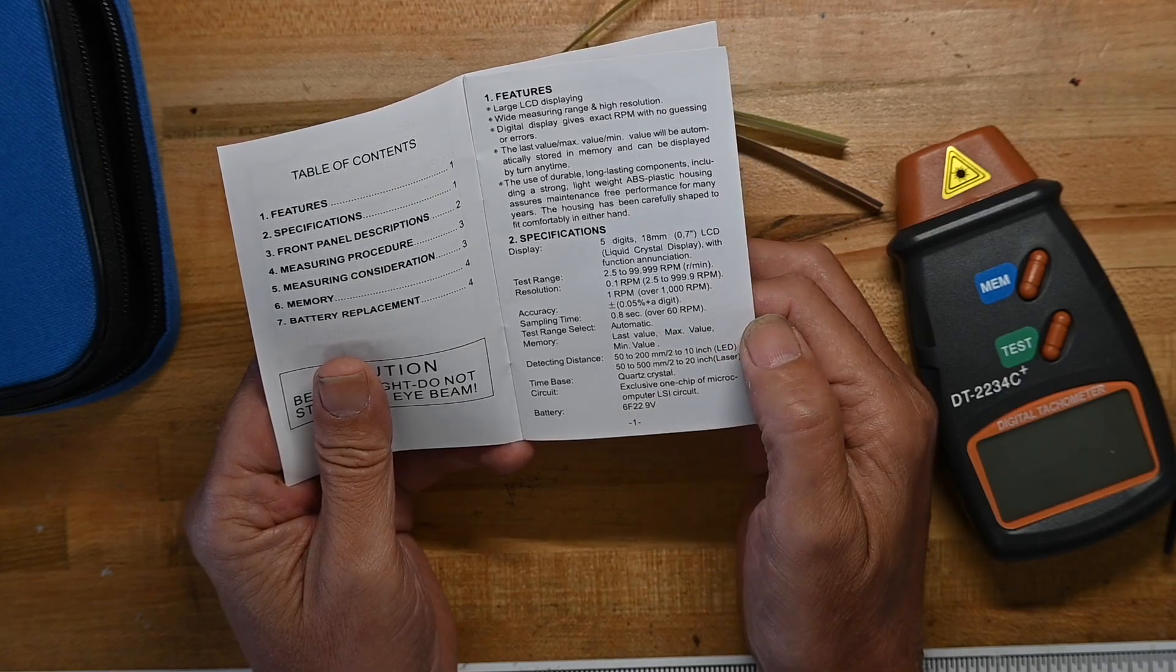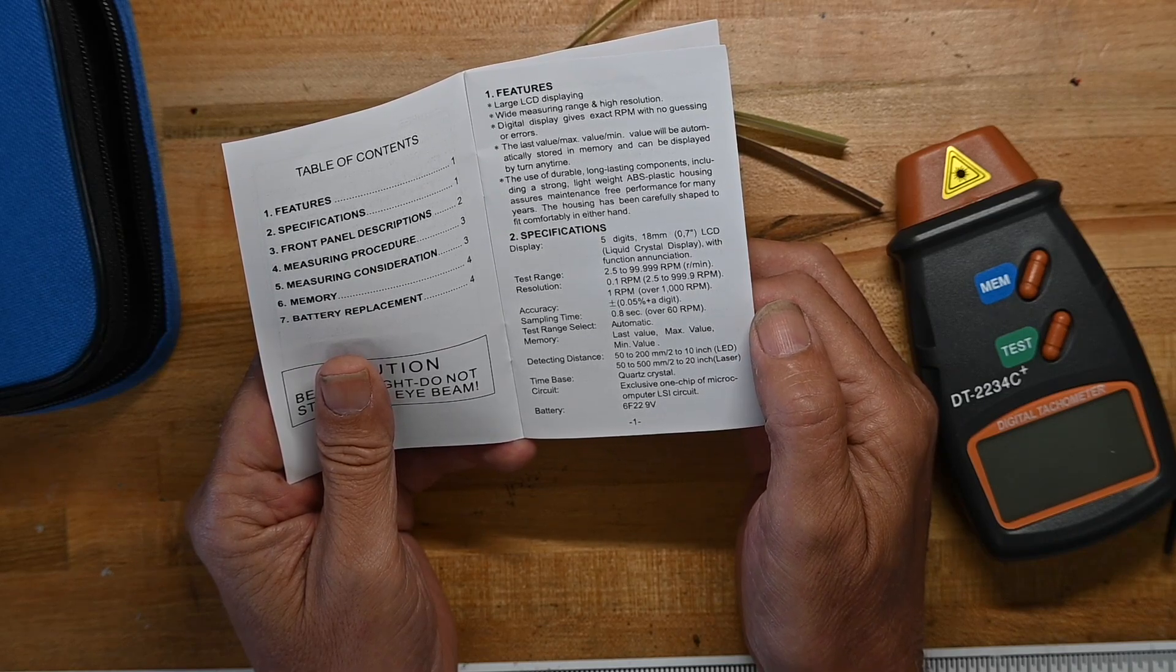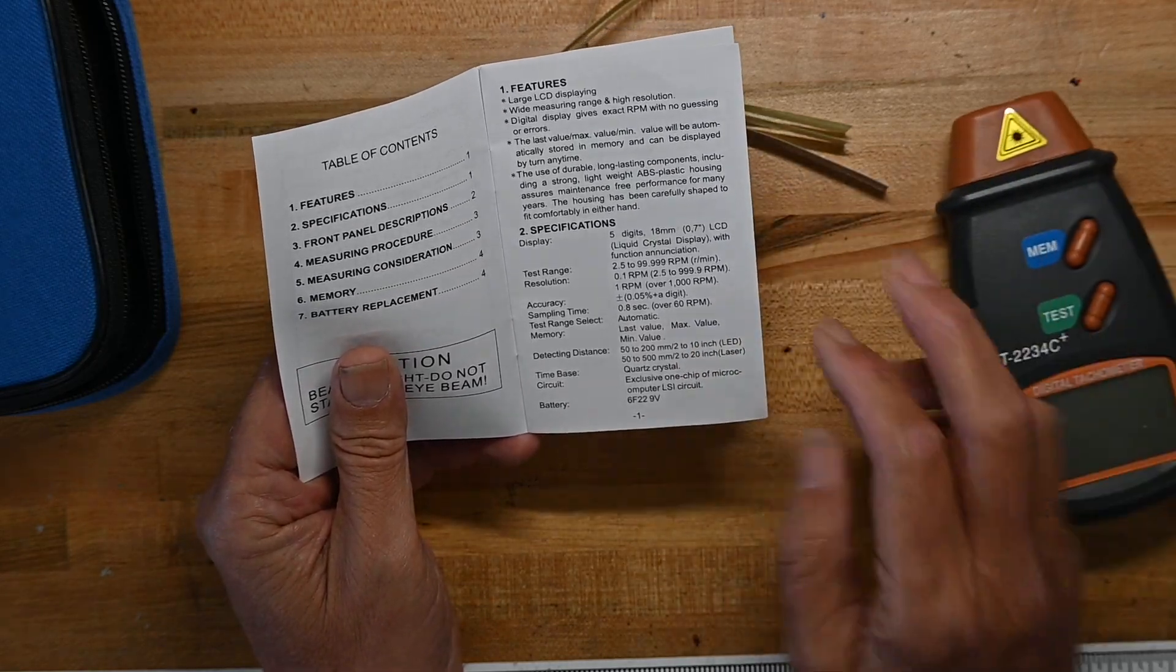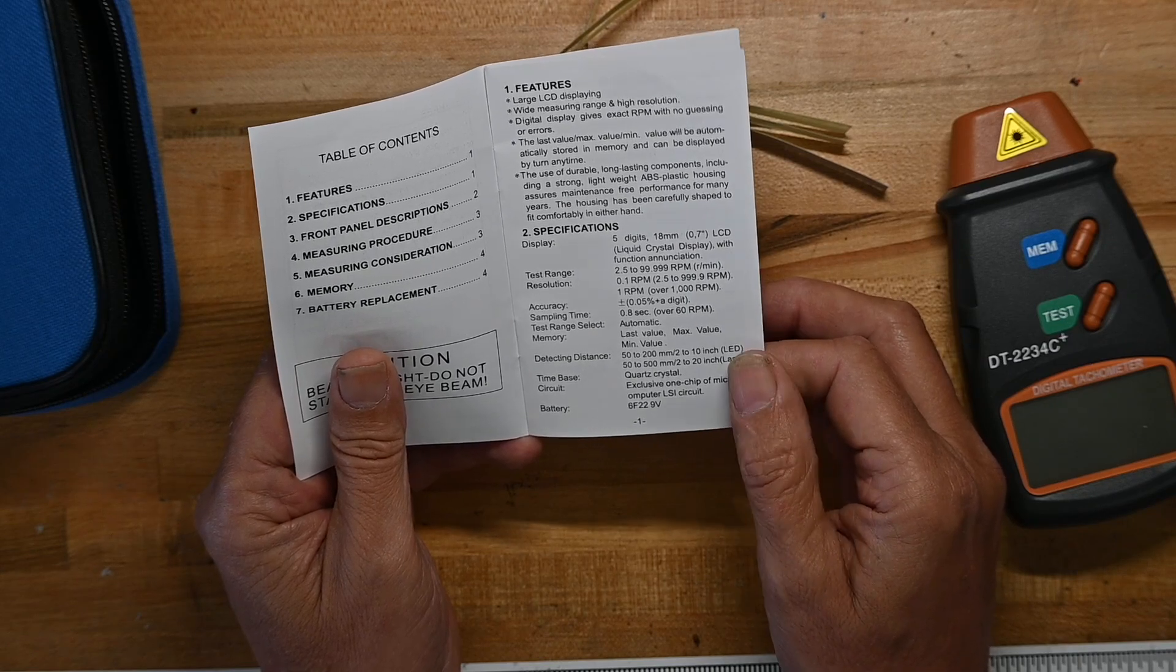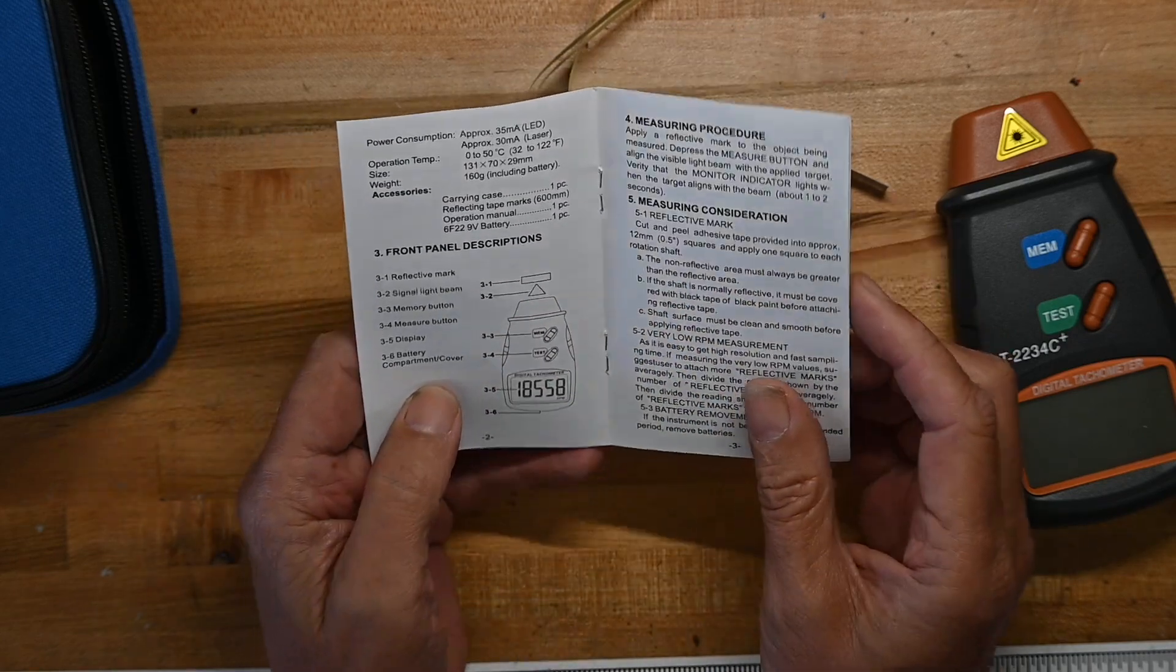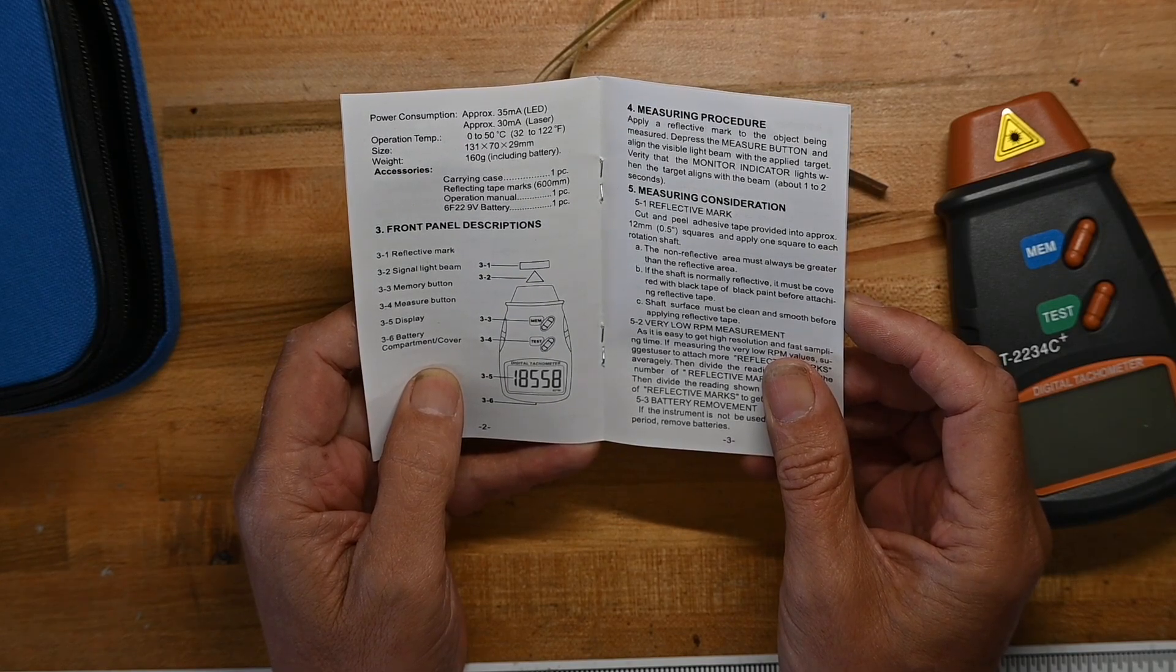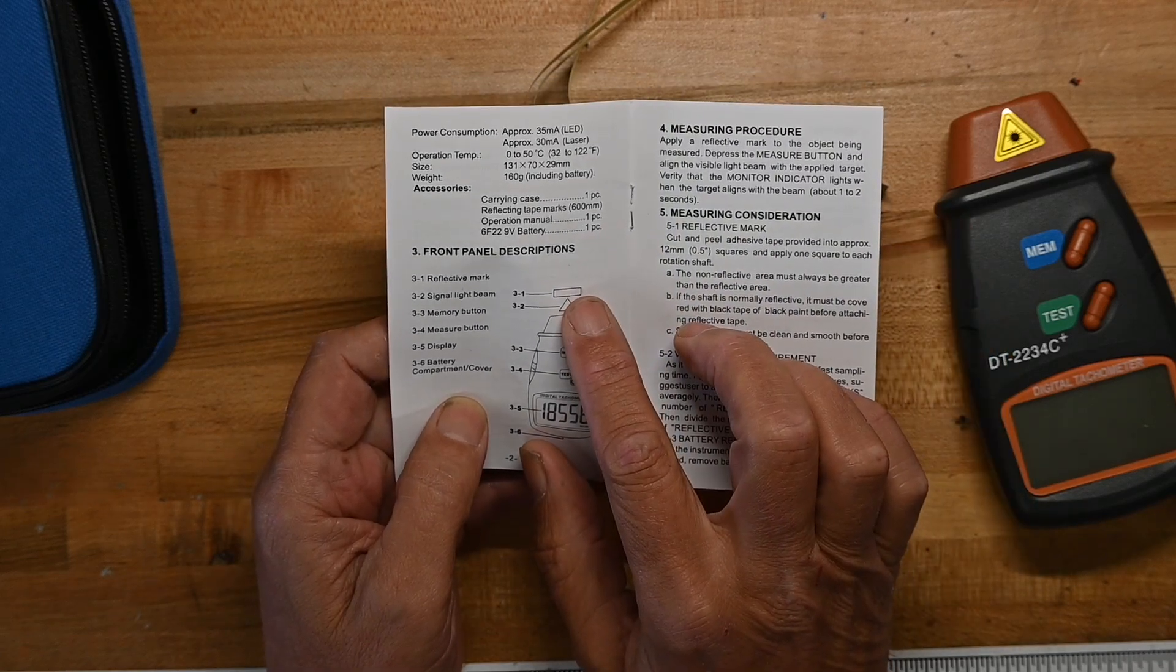Test range is automatic. Memory has a bunch of things. Detecting distance: 50 to 200 millimeters for LED, 50 to 500 millimeters for laser. And I believe this is laser. Time base is a quartz timer crystal. Battery 9 volt - well, that's not true. I guess it's got both LED and laser. I'm not real sure. So there's the reflective mark we put on something. Signal light beam, memory button, measure button.